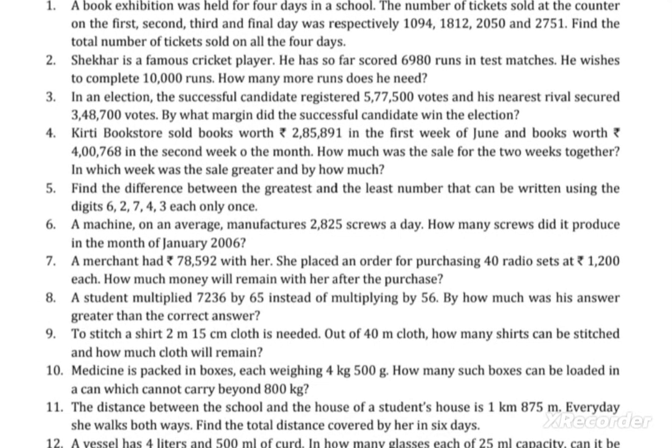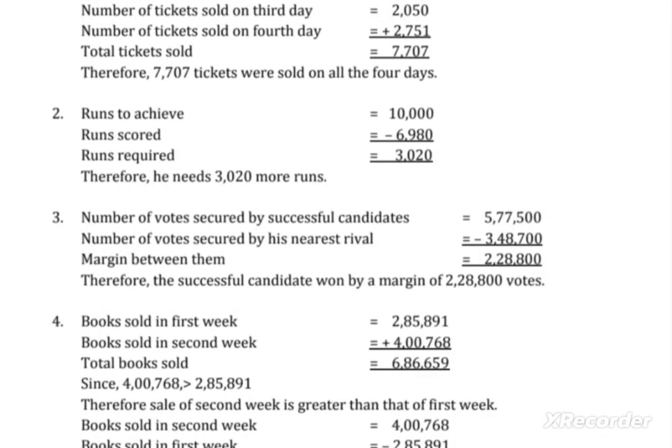The third question: in an election, the successful candidate registered 577,500 votes and his nearest rival got 348,700 votes. You have to find by what margin the winner won. You simply subtract — take the successful candidate's votes and minus the rival's votes to find the winning margin.